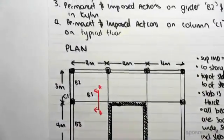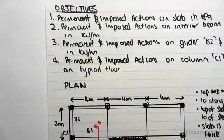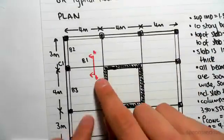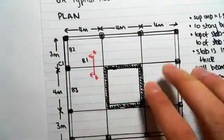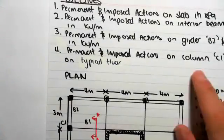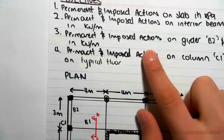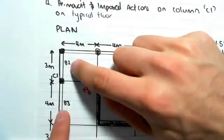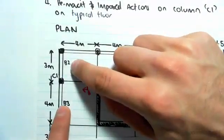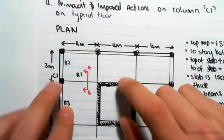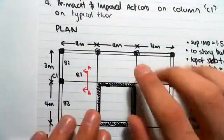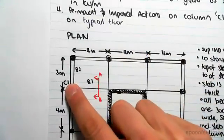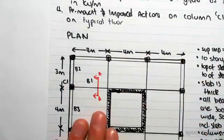Our goal is to find imposed actions on interior beam B1 — that beam over there — and imposed and permanent actions on B2 and B3, so B2 is over there and B3 is over there. Then we're going to use all that information to work out the permanent and imposed actions on column C1 over there.